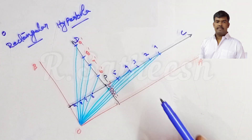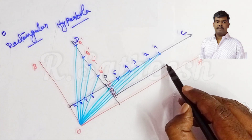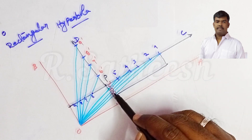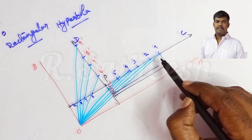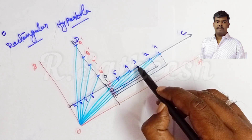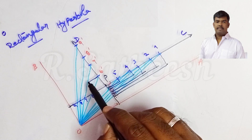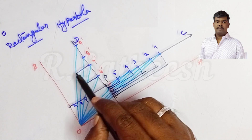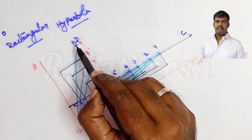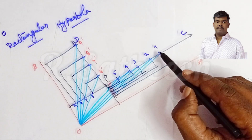From 1-dash, draw a line parallel to the OB asymptote. From 1, draw a line parallel to OA — which is also perpendicular. Similarly from 2-dash, draw parallel to OA; from 2, draw parallel to OB. Repeat this for 3 and 3-dash, 4 and 4-dash, 5 and 5-dash, 6 and 6-dash, 7 and 7-dash, 8 and 8-dash, 9 and 9-dash — all as parallel lines.